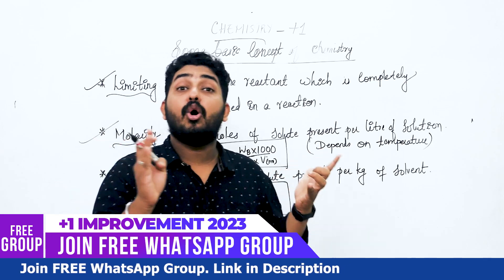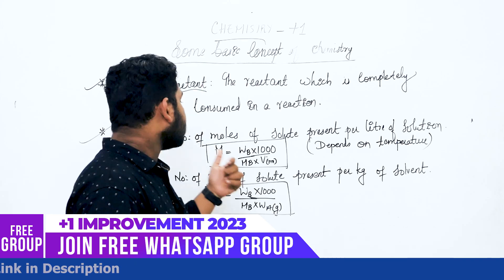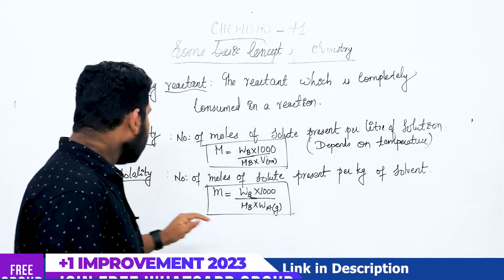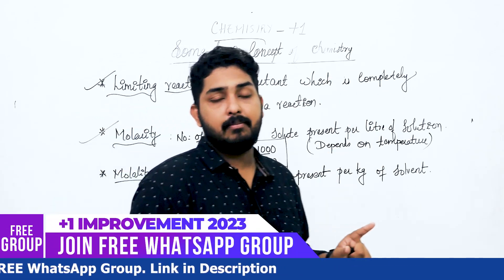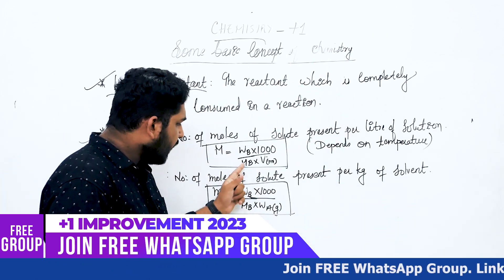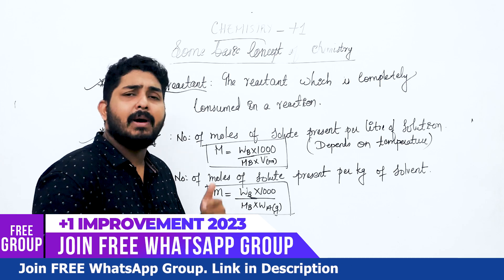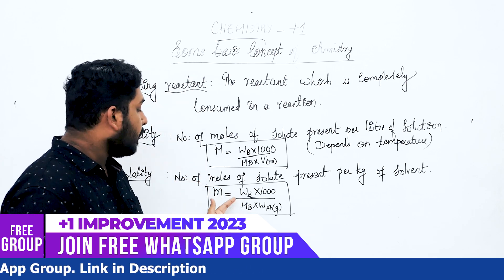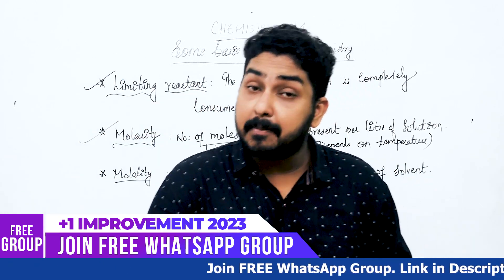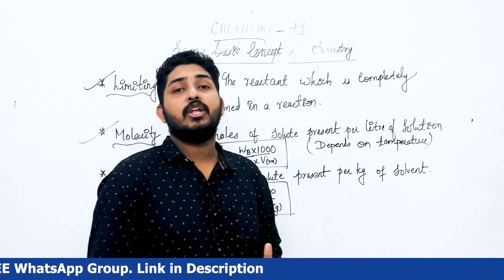In the case of molality, molality is similar. We use a small letter m for molality. The equation is: molality = WB × 1000 divided by MB × WA, where WA is the mass of solvent in grams.